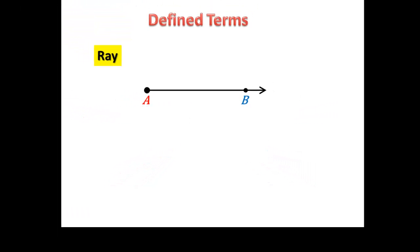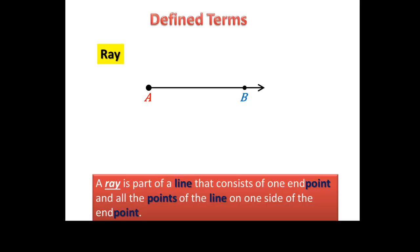Now let's talk about a ray. A ray is part of a line that consists of one endpoint. So in this ray, point A is our endpoint and all the points of the line on one side of the endpoint. You can name a ray by its endpoint and another point on the ray such as AB. The order of points indicates the ray's direction. This endpoint of this ray here has to be over the letter A because that's telling us that our ray started with this endpoint right here.